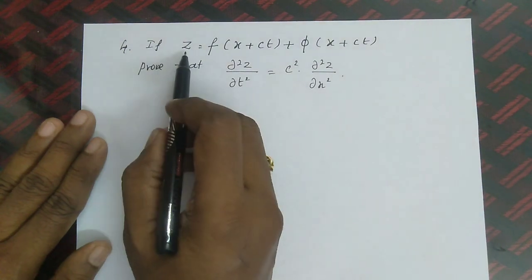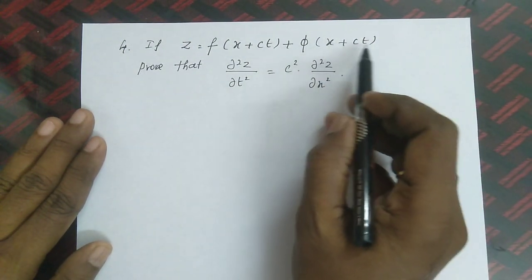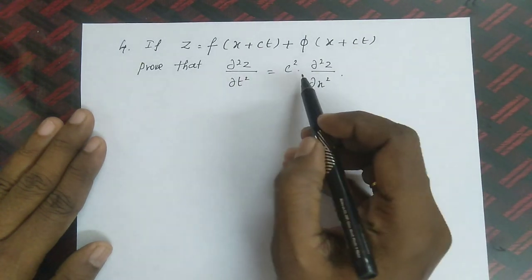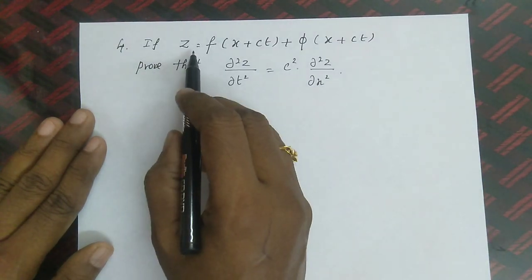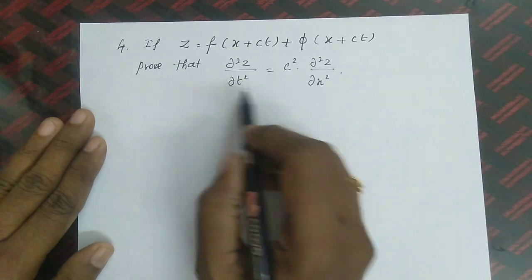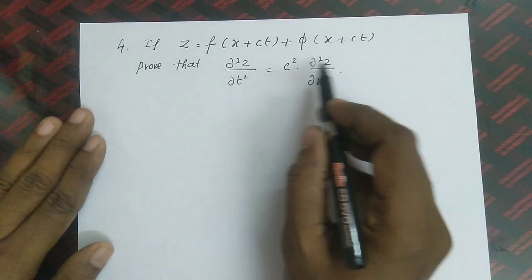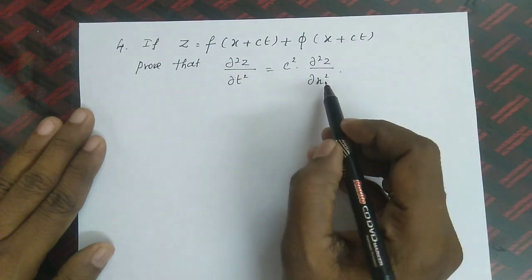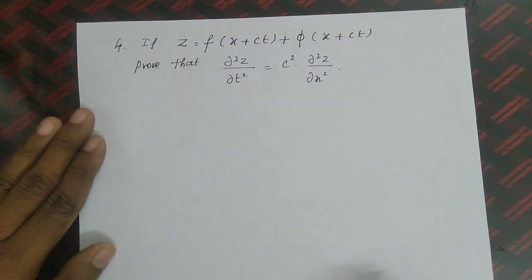Fourth question: If z = f(x + ct) + φ(x - ct), prove that ∂²z/∂t² = c²·∂²z/∂x². Here z is a function of x and t. We are going to find all four derivatives and by equating them, arrive at the result.